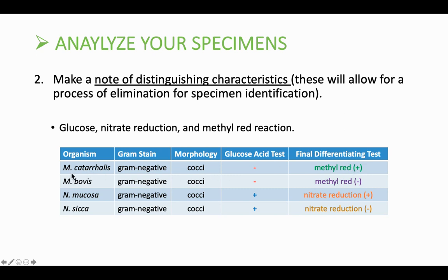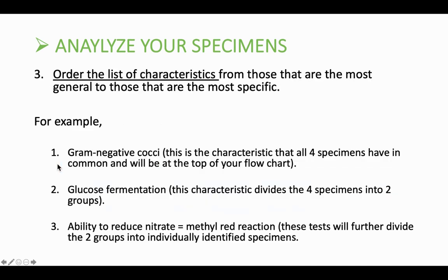So last but not least, in this first step, ordering that list of characteristics from most general to most specific is the best way to start getting ready to make the key. If we look at the first genera, we were able to use the methyl red test to distinguish species. Ordering from most general to most specific is the best approach before actually drawing the key.